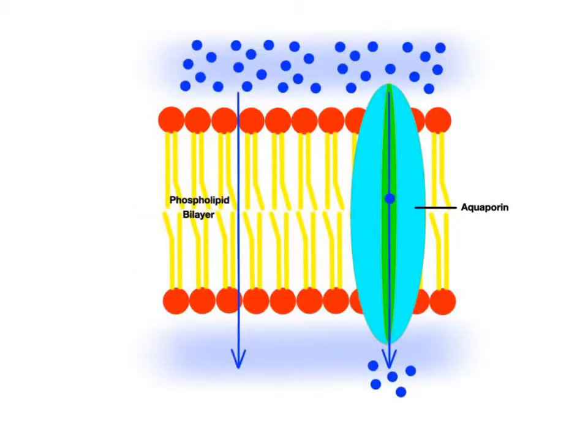During osmosis, water molecules move across the cell membrane in two ways. They are small enough to pass in between the phospholipid molecules making up the membrane, and they can travel through special channel proteins called aquaporins. These integral membrane proteins have a hydrophilic pore or tunnel that allows water molecules to move very efficiently into or out of the cell.